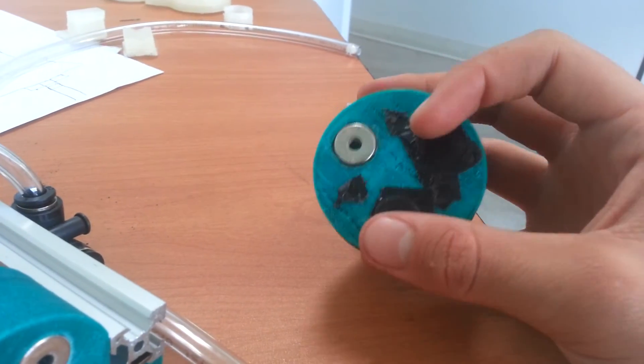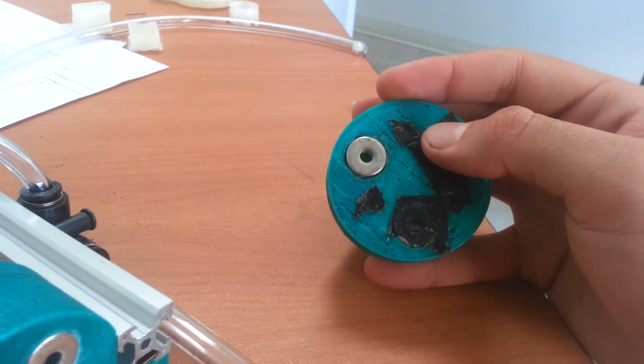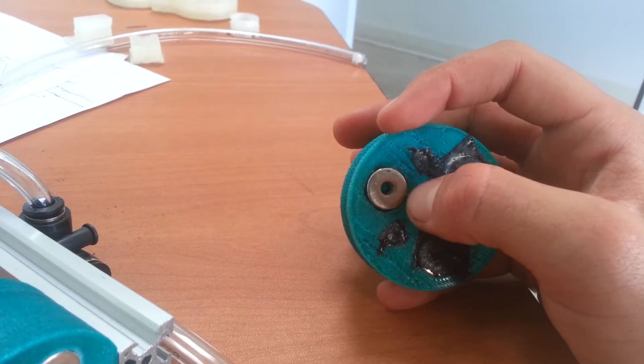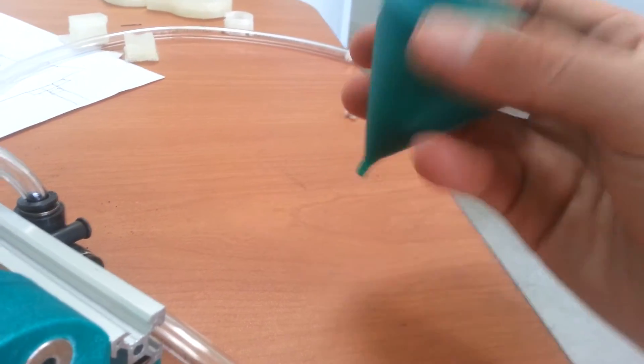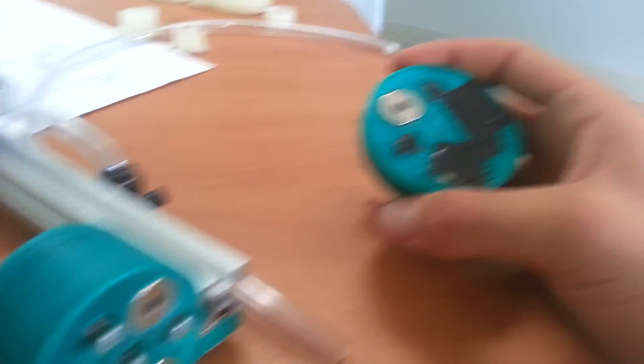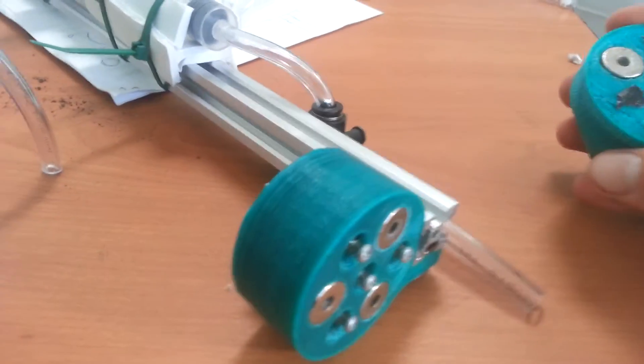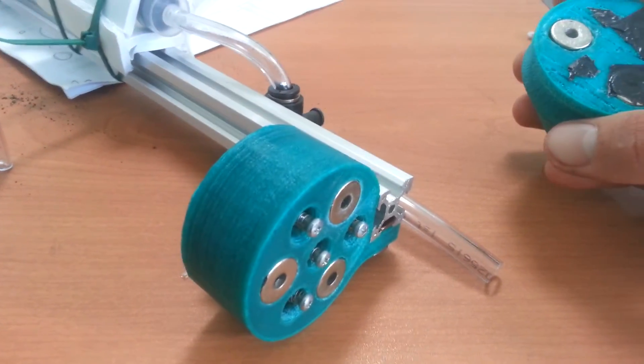And the way this works, and the reason why these are taped up right now, is that the vacuum pump is not located in this tool. The vacuum pump is actually going to be on either the z-axis or the gantry somewhere on the FarmBot.